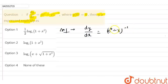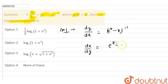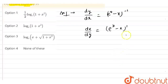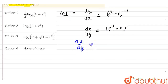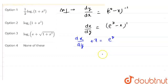Now I am taking this term over here and this term over here. It will be dx/dy equals e raised to the power of (y minus x) raised to the power of 1. Now I am taking x over here, so it will be dx/dy plus x equals e raised to the power of y.